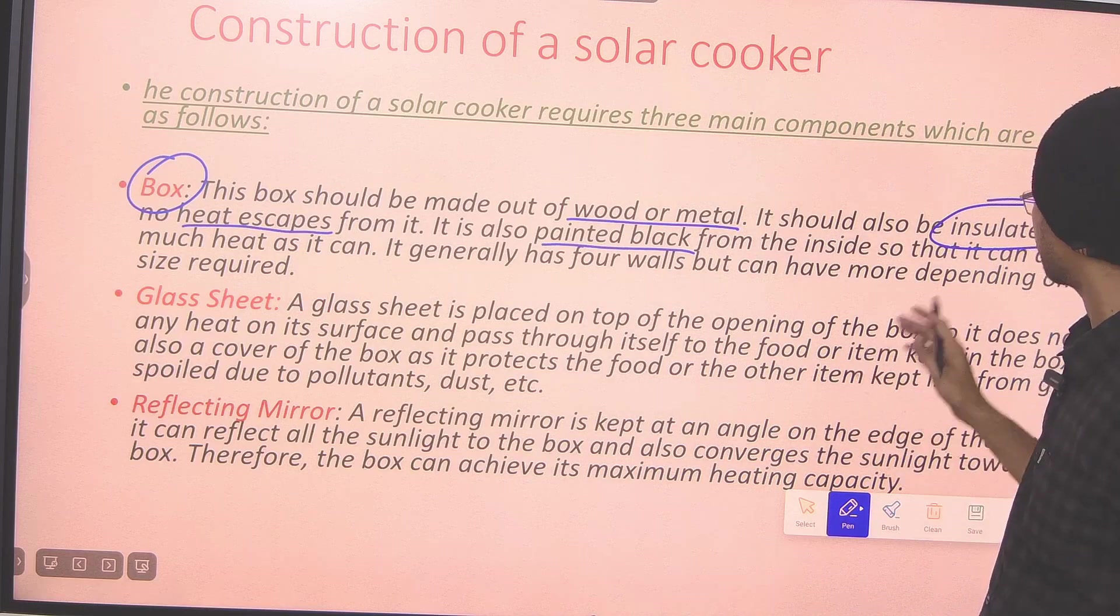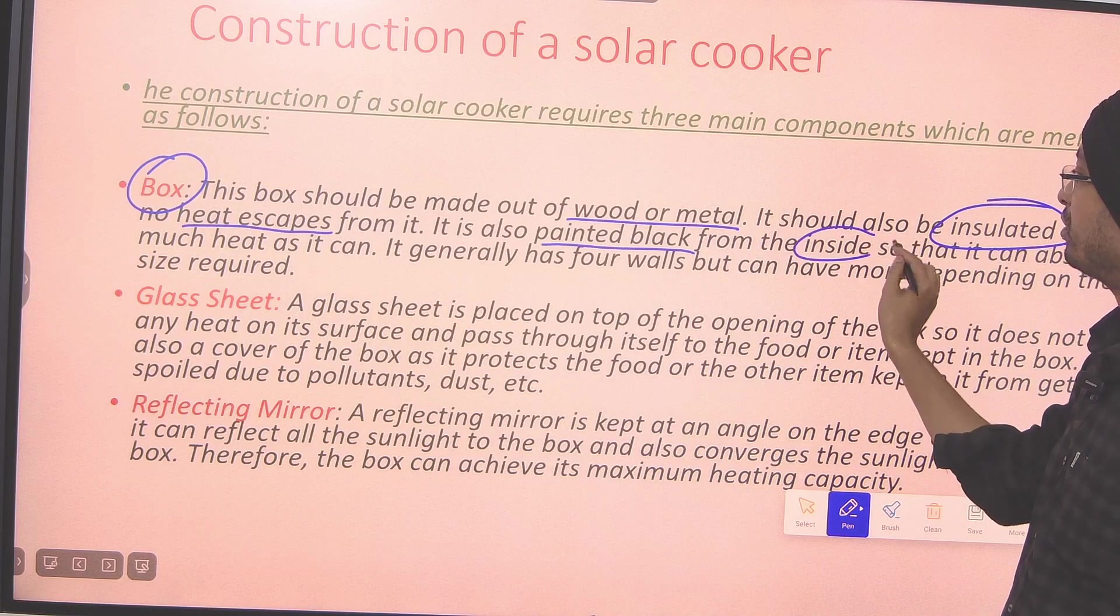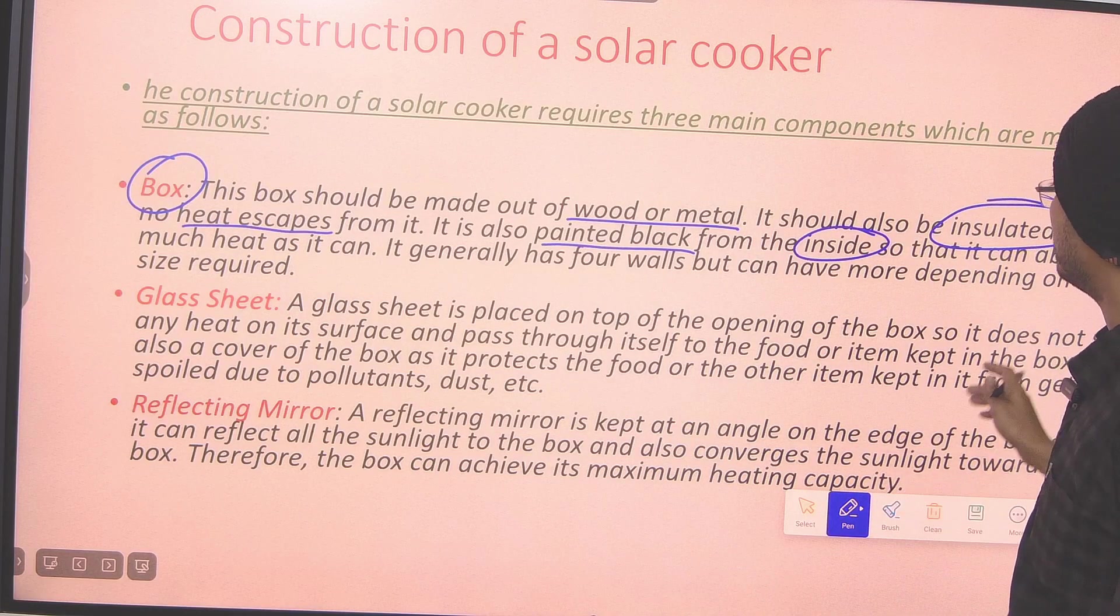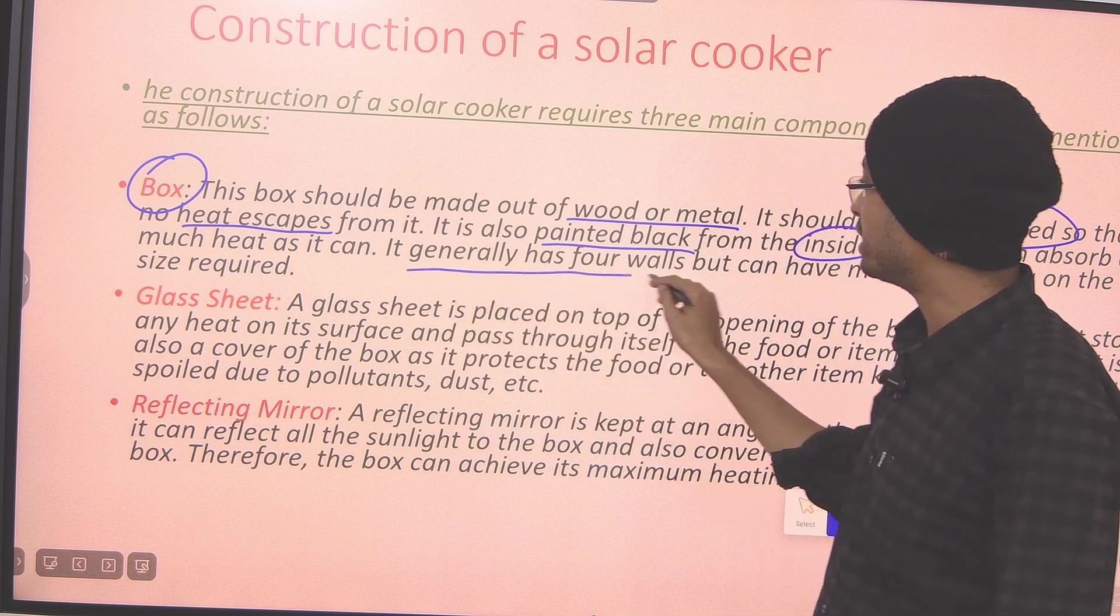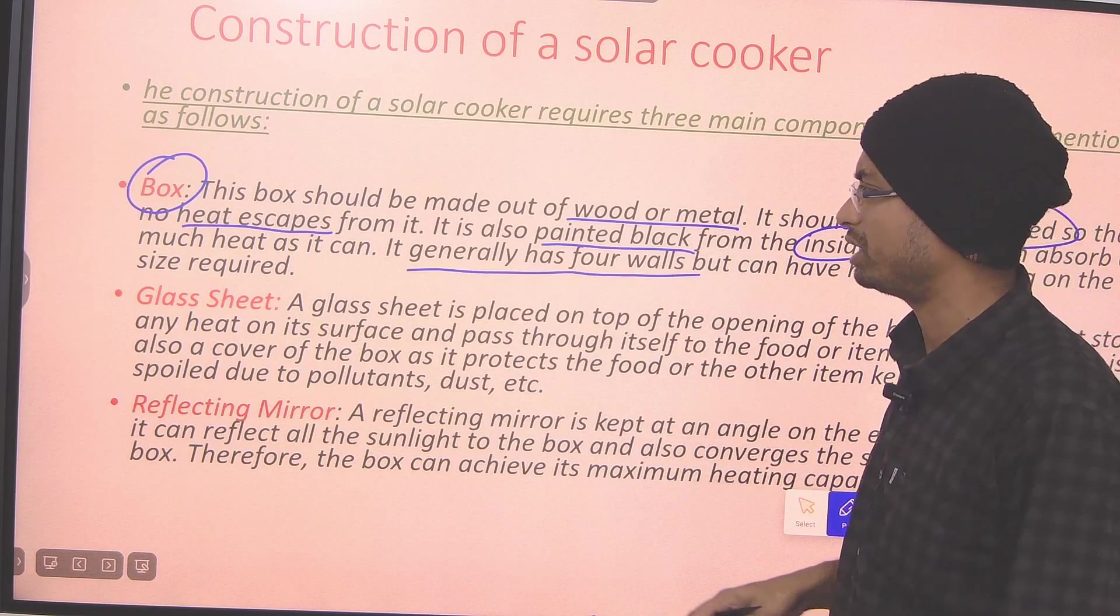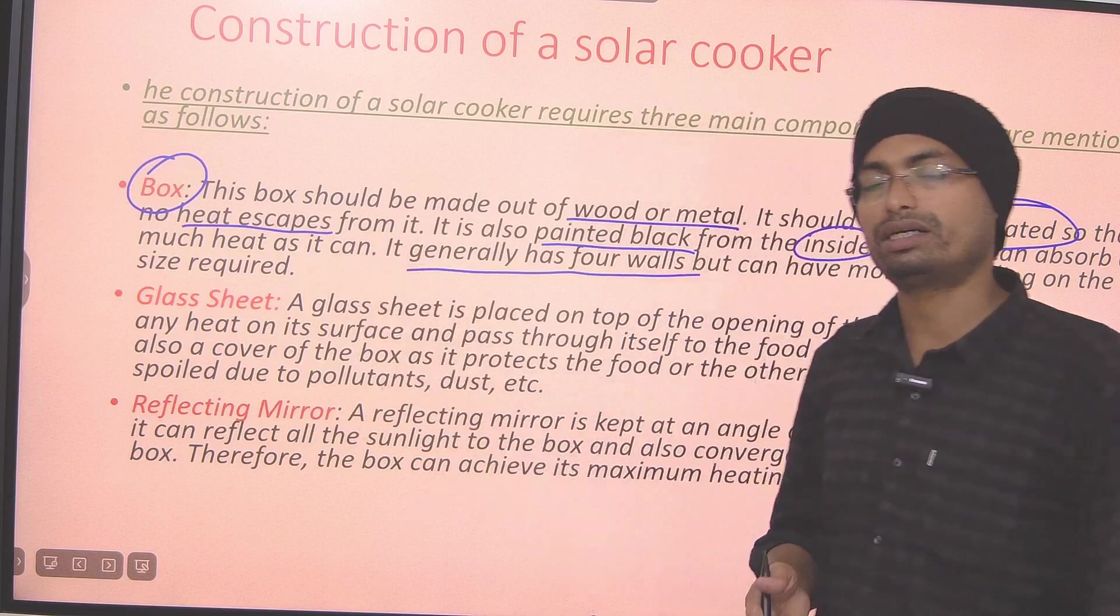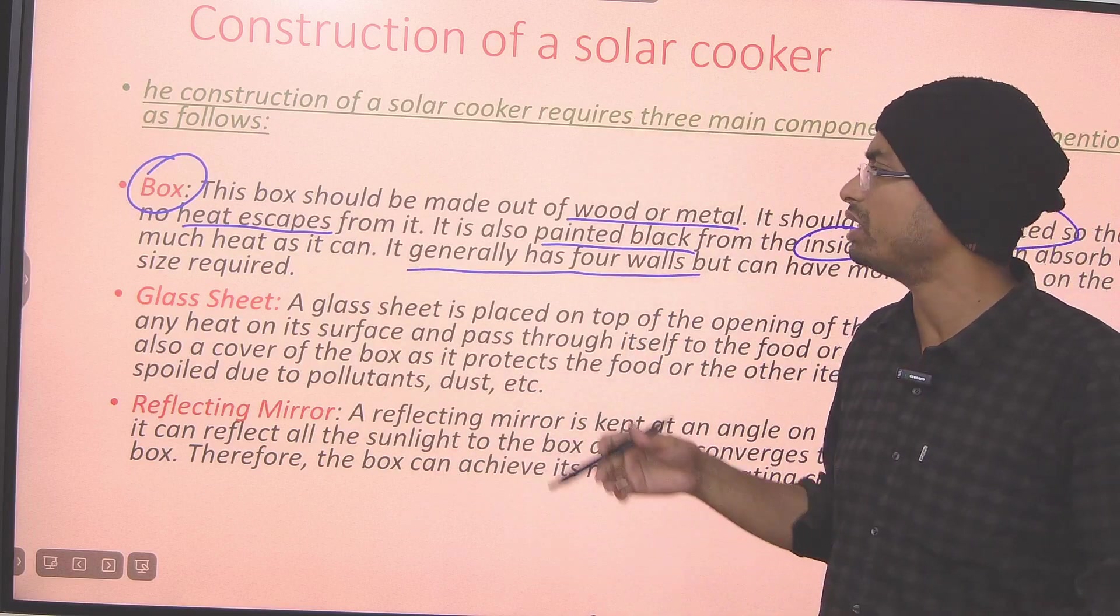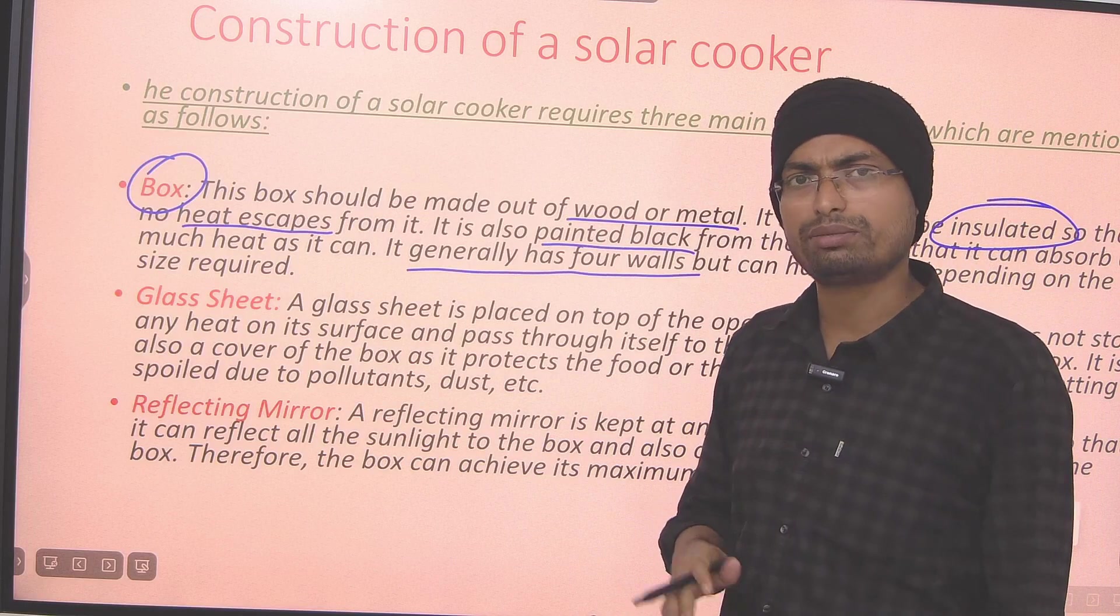If heat goes out, it will stop it. So, it works perfectly to keep the heat in. And the inner side is painted black. We put a layer of black paint. Again, what is the box? The box has four walls. And the size depends. It can be small or big according to the requirement.